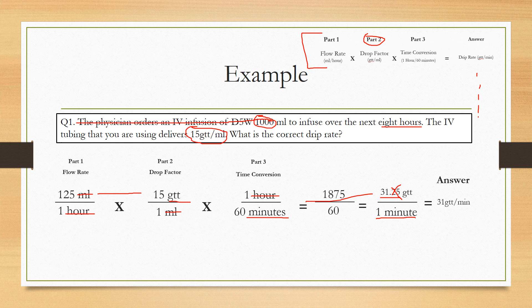So this is basically the simplest way to calculate a drip rate. If you follow these three steps with all the correct units in each step, then you're going to be fine and you're going to get the right answer every time.